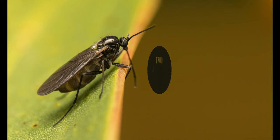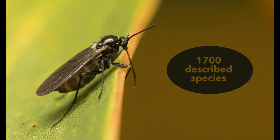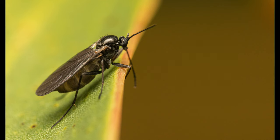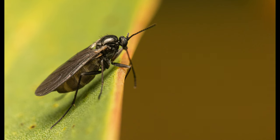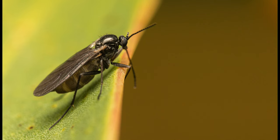Currently around 1,700 species are described, but an estimated 20,000 species are awaiting discovery, mainly in the tropics. These gnats are very small, typically from 1 to 7mm long.